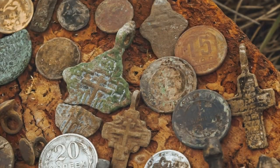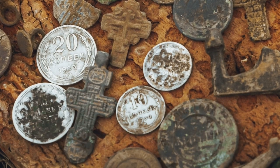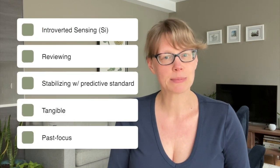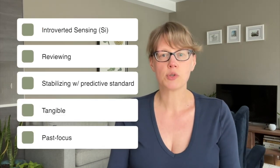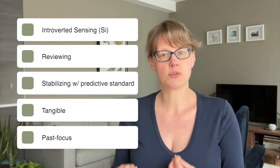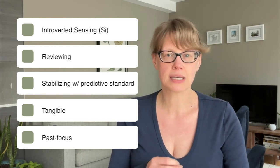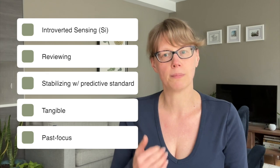Moving on: think about how coins have changed over the years. You might say they changed in size, weight, or the emblems on them. This process is called introverted sensing, also known as reviewing or stabilizing with a predictable standard. Comparing what you see now to how things were in the past is also tangible, but the focus in this case is internal and on your memory.